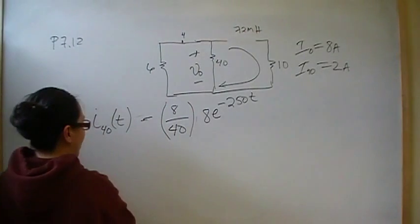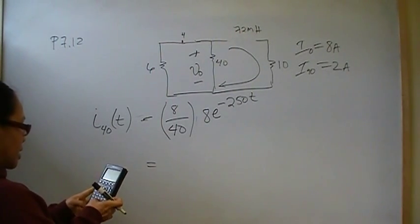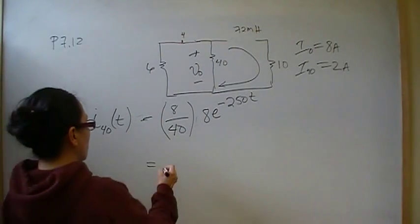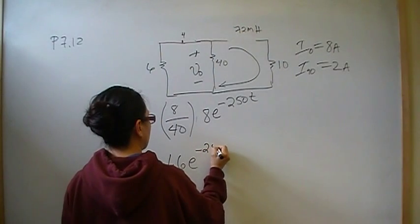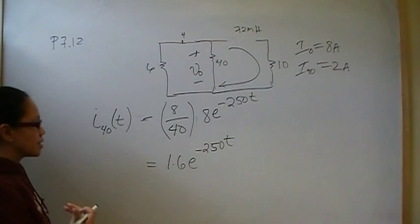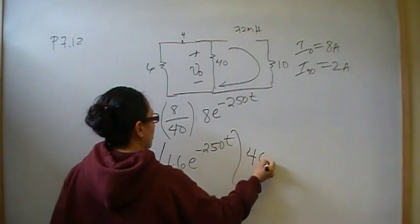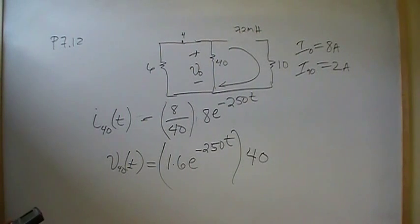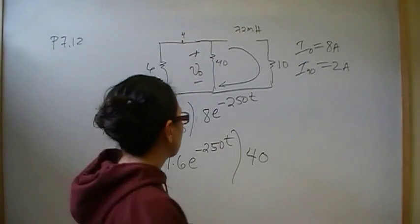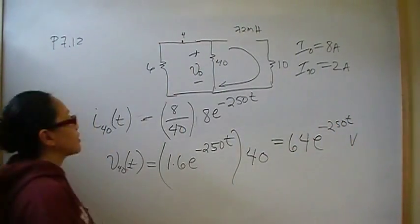And that gives me 8 times 8 times 8 divided by 40. That's going to give me 1.6E to the minus 250 negative minus 250T. That's the current that's going to be the general equation for that current. But we're not looking for the general equation for the current. We're looking for the general equation for the voltage. So the voltage is going to be current times resistance. So V40 of T, the general equation for the voltage, is going to be the current times 40. So 1.6 times 40. That will give you 64E to the minus 250T volts. And that's the answer for problem number 12.